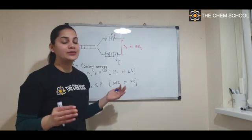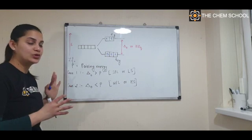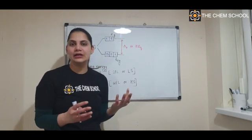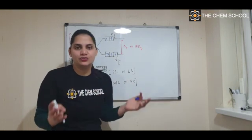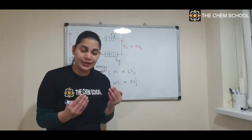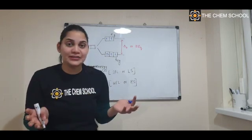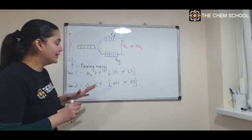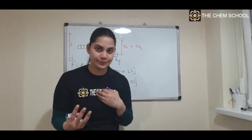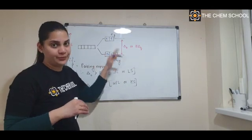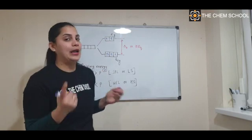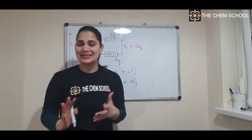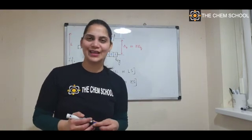For example, if the ligand is ethylenediamine (en) with 7 electrons in the d orbital in an octahedral complex — since ethylenediamine is a strong field ligand, 6 electrons will pair up completely in T2G and the 7th electron goes to EG, giving 1 unpaired electron. That is how you solve questions based on the spectrochemical series. We will solve more questions on magnetic properties in the next class. Thank you.